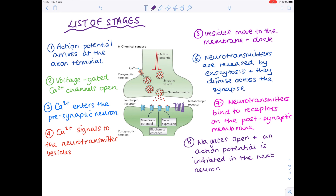Let's make sure you're happy with labelling the synapse. Here's the synaptic cleft, here's the presynaptic membrane, and here's the post-synaptic membrane with receptors for the neurotransmitter, which has diffused across the synaptic cleft and got released from these bubbles known as vesicles by the process of exocytosis.